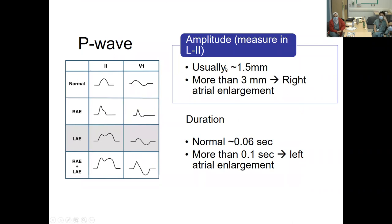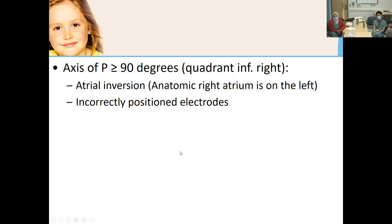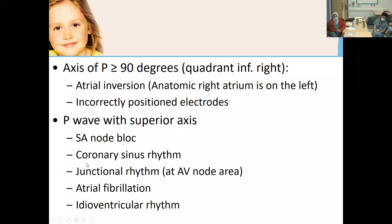In babies, normal P wave height is about 1.5 mm; more than 3 mm suggests right atrial enlargement. Normal P wave duration is 0.06 seconds — three small boxes. More than that, or more than 0.1 seconds, suggests left atrial enlargement. Abnormal P wave axis may indicate atrial inversions, situs inversus, or heterotaxia. Always verify electrode placement first. P wave in superior axis should prompt consideration of junctional rhythm, atrial fibrillation, or SA node block.